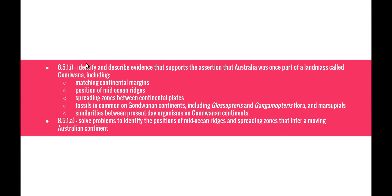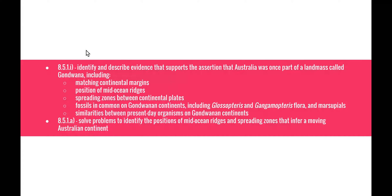Welcome to the next video in the evolution unit. This video will be looking at two dot points from the evolution of Australian biota unit: 8.5.11, identifying evidence that Australia was once part of Gondwana, including matching of continental margins, position of mid-ocean ridges, spreading zones between continental plates, fossils in common on Gondwana continents including Glossopteris and Gangopteris flora and marsupials, and similarities between present-day organisms on Gondwana continents, as well as dot point 8.5.1a on identifying positions of mid-ocean ridges and spreading zones that infer a moving Australian continent.